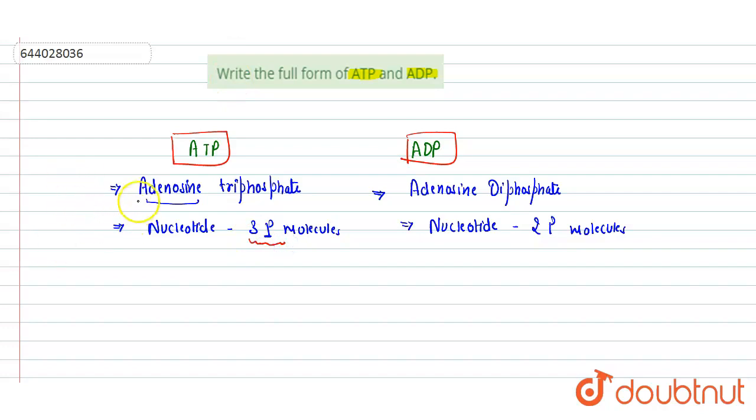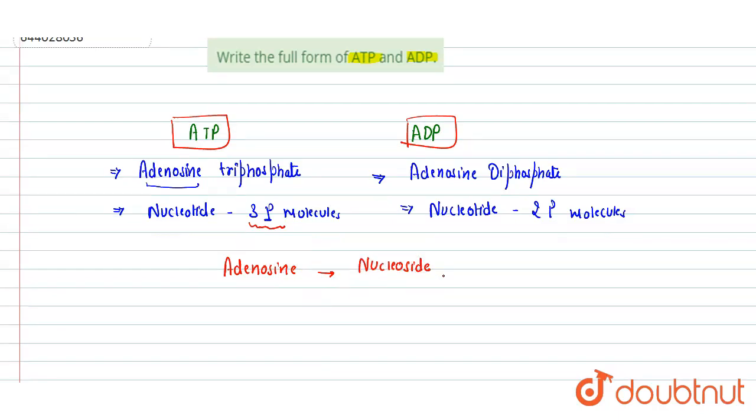Adenosine is a common nucleoside present in both. A nucleoside contains one nitrogenous base, which is adenine in this case because it's adenosine. The nitrogenous base present is adenine.